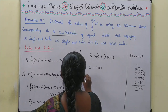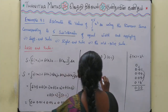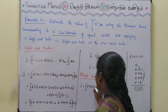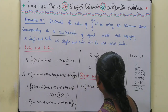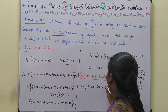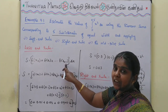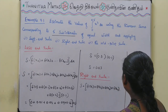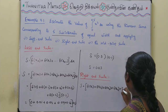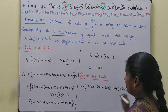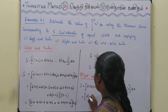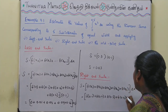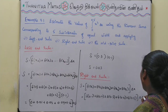For the right-end rule, the formula is S = [f(x1) + f(x2) + f(x3) + f(x4) + f(x5)] × delta x. Substituting: f(0.1) + f(0.2) + f(0.3) + f(0.4) + f(0.5), all into delta x = 0.1. Since f(x) = x², these are 0.01 + 0.04 + 0.09 + 0.16 + 0.25.